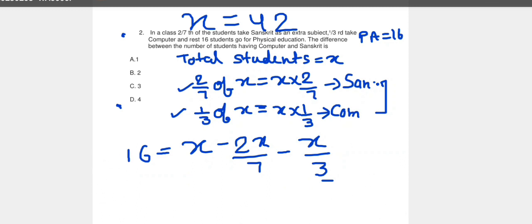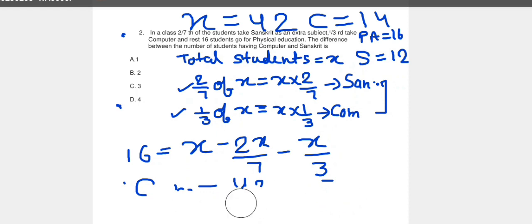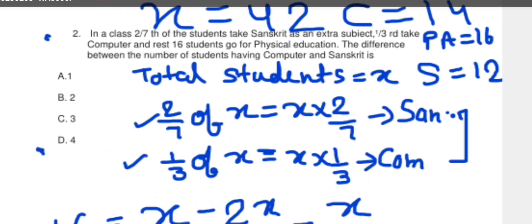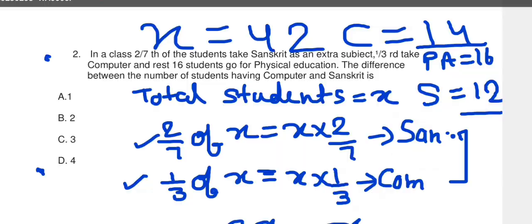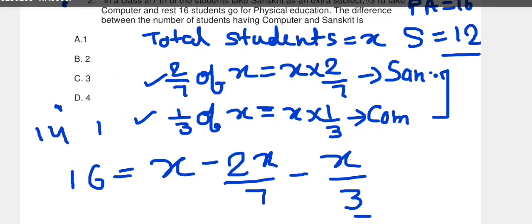Now, if we find out Sanskrit, the value of X for Sanskrit will be 42 into 2 by 7. Divide by 7, 6 times 2 is 12. So Sanskrit students are 12. Now, if we want Computer, X by 3, means for Computer it will be 42 by 3. Divide, we get 14. Computer students are 14. The question asked what is the difference between Computer and Sanskrit. Computer is 14, Sanskrit is 12. The difference is 14 minus 12 equals 2. The right answer is option B, 2.